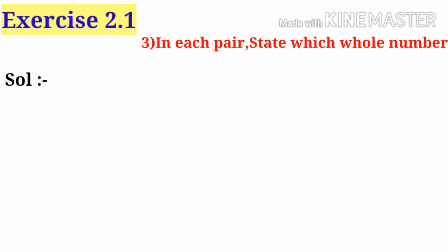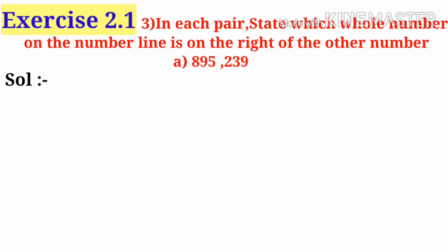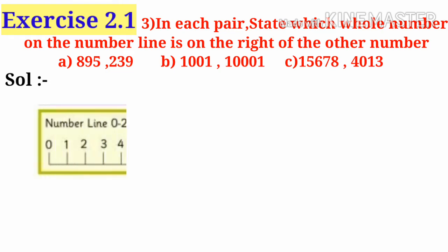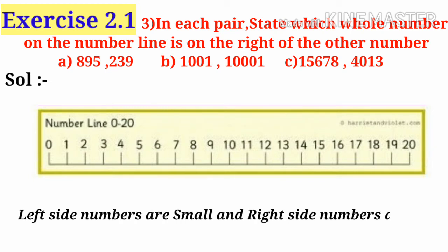Now third problem: in each pair, state which whole number on the number line is on the right of the other number. Problem number a: first consider a number line from 0 to 20 and observe that left side numbers are small and right side numbers are big.